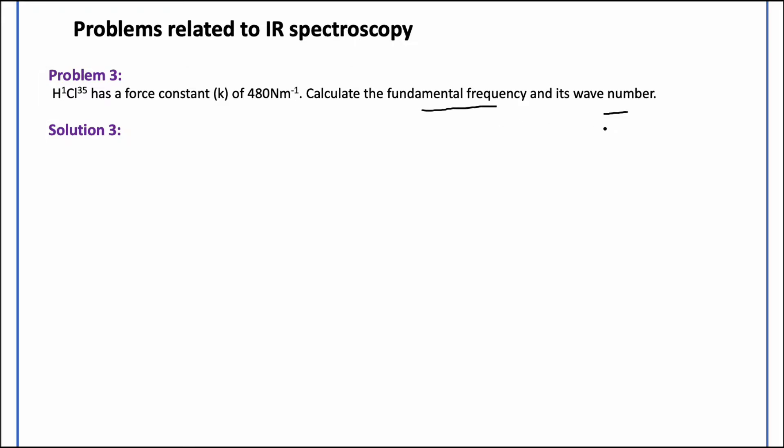So fundamental frequency is required and its wave number is also required. The force constant is given to us, so let's proceed. We have mu equals m1 times m2 upon m1 plus m2, the two masses which are given to us, and those are that of hydrogen and chlorine.